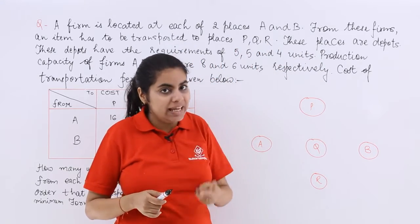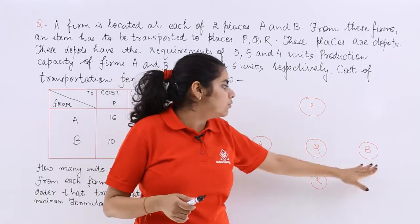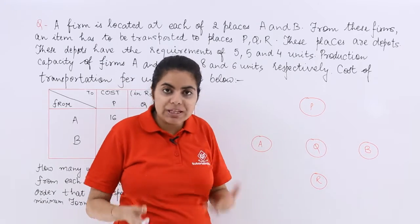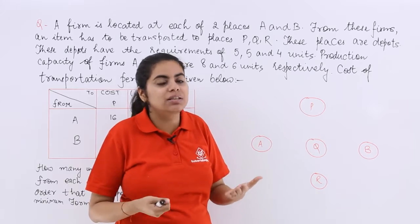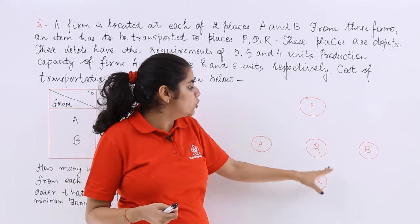So there are two firms A and B. I have drawn these two firms A and B. And from these two firms we have to transport certain commodities to P, Q, R.